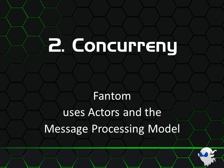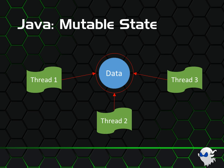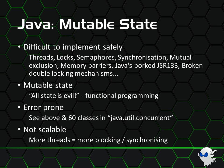Number two: Concurrency. Fantom uses actors and the message processing model. This is quite a technical topic that really deserves its own presentation, but it is also too important not to mention. First, we'll look at Java's stance on concurrency — it uses mutable state. Each thread has access to the same bit of data, and each thread may update it at any time. Unfortunately, Java tries to be clever and introduces things like thread data caching. And what happens when you need to update two bits of data at the same time and you don't want any thread to access it until you're finished?